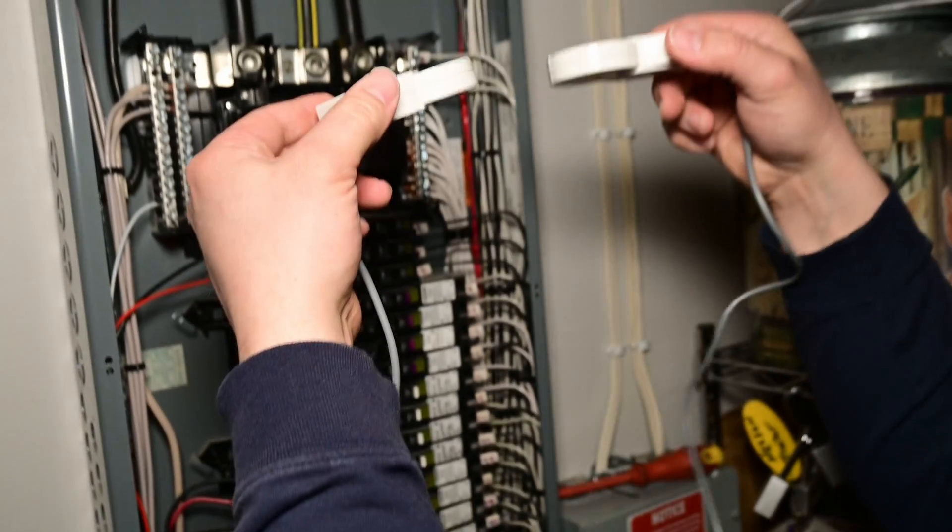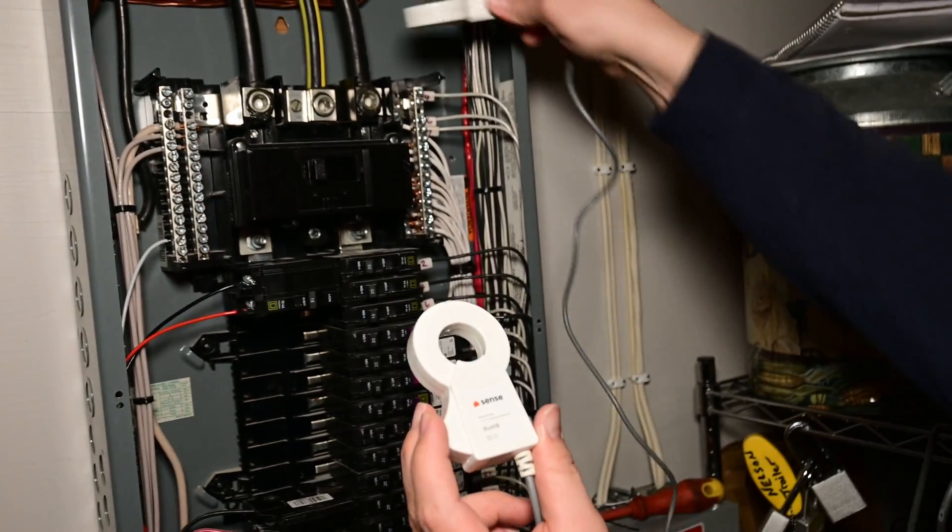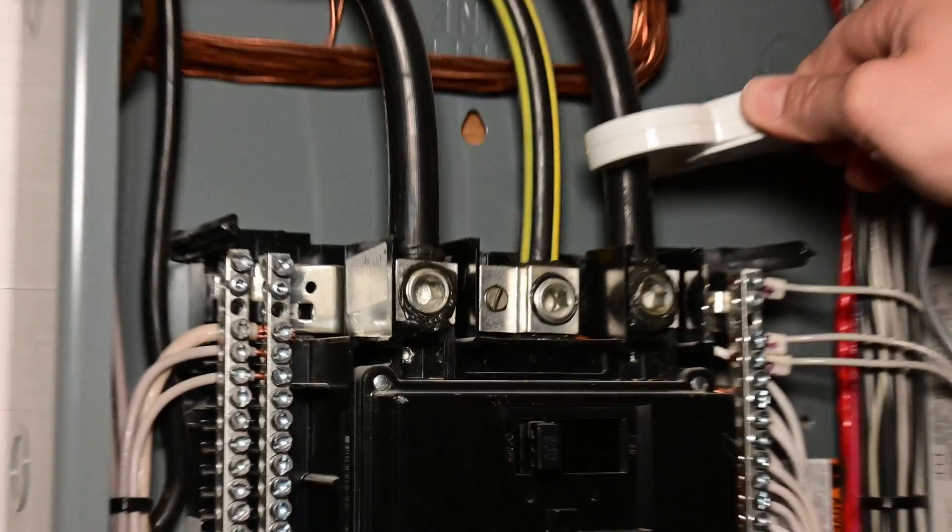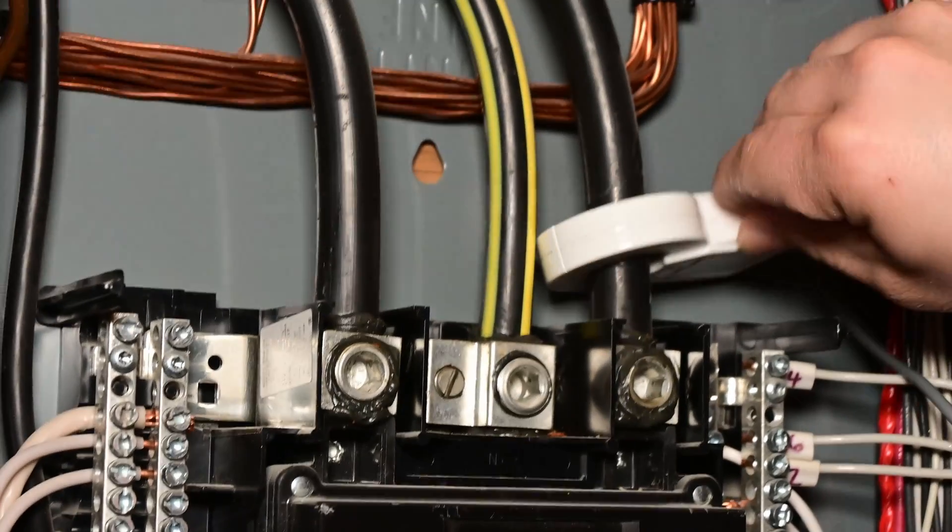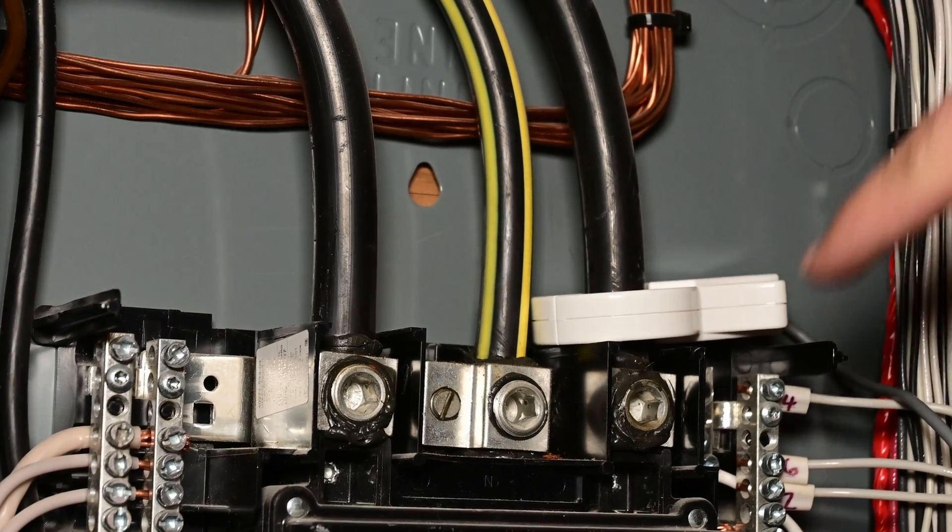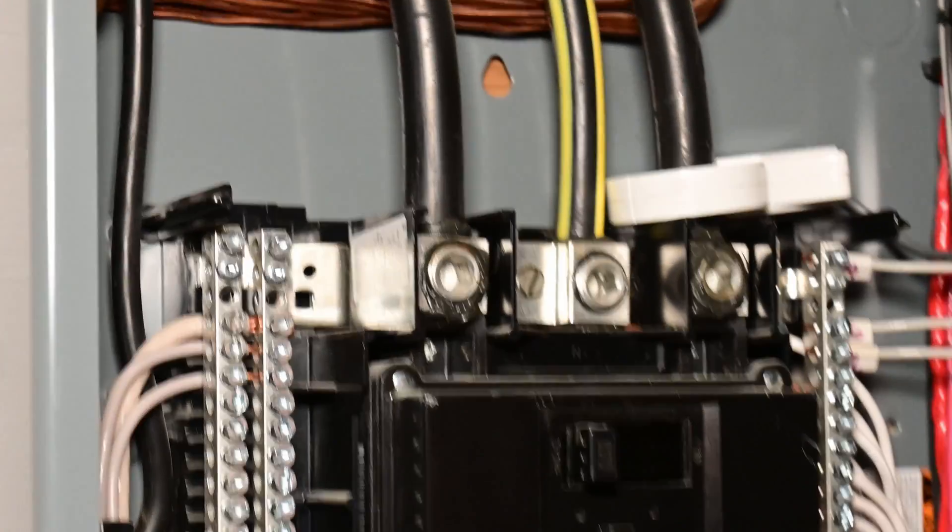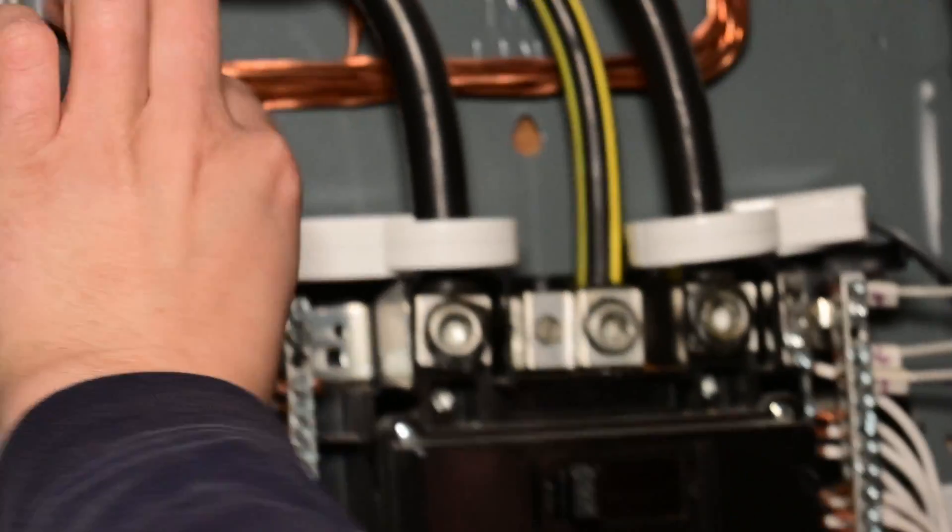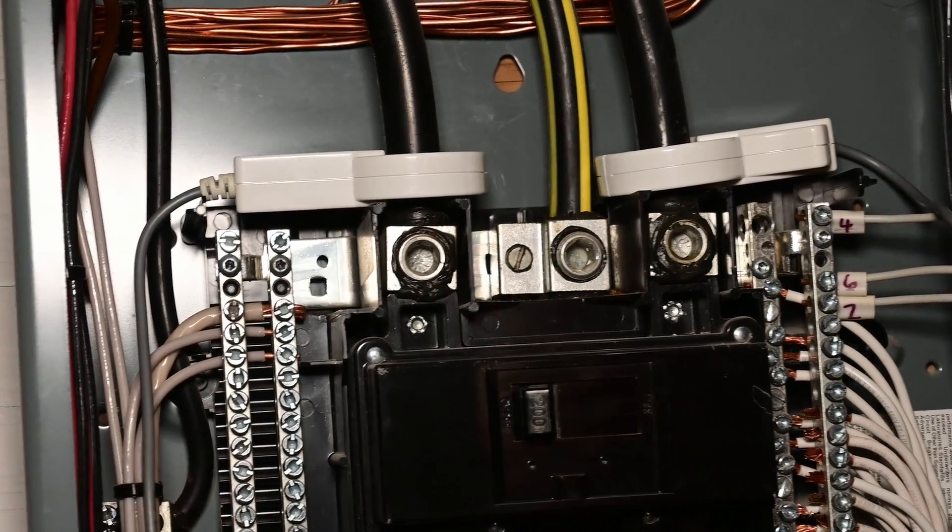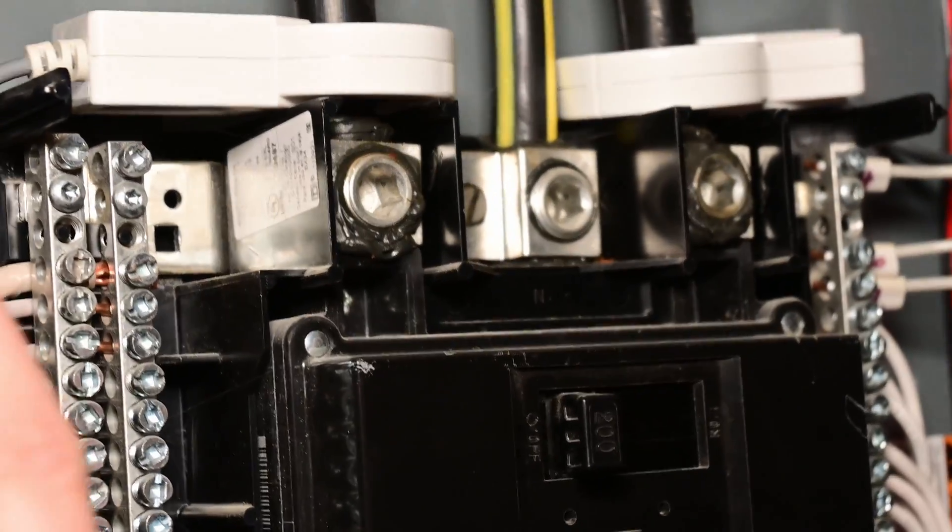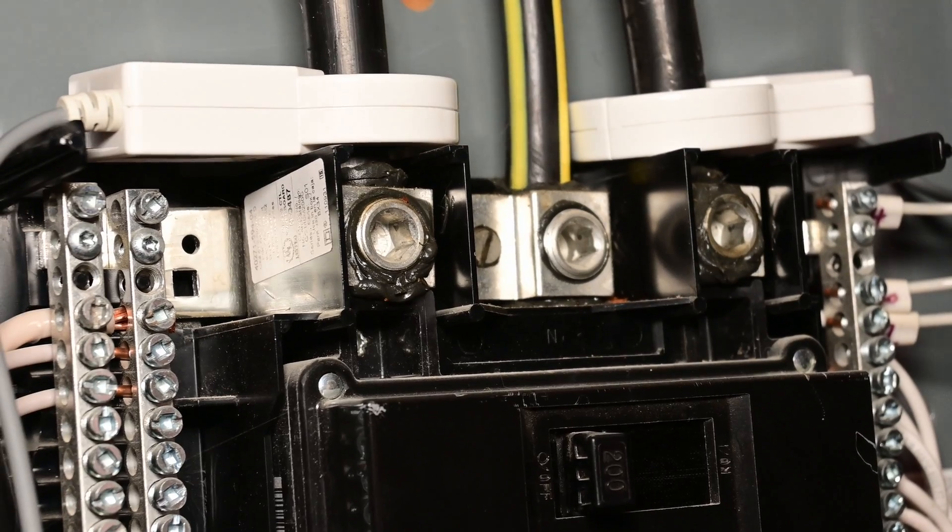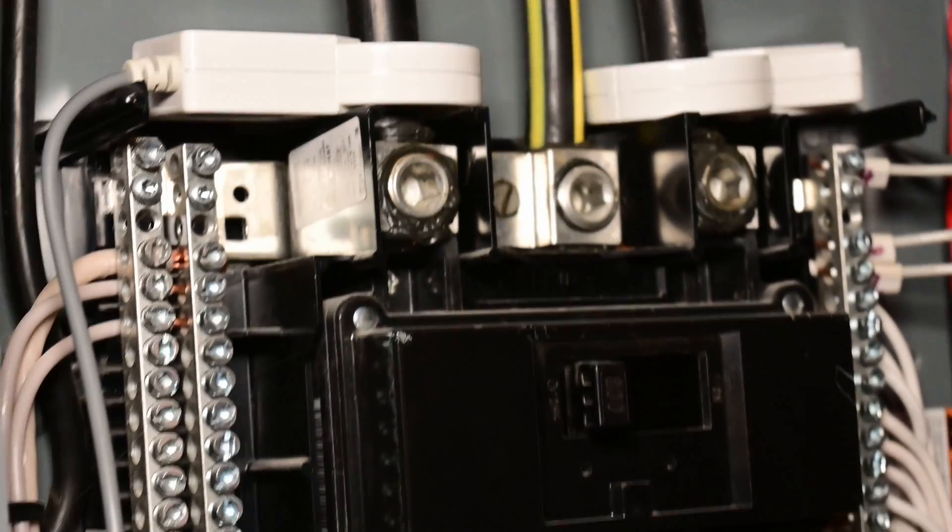We're going to clamp these around each one of these legs. I'm just going to use one hand because these are still live right here. That's still live power. If I were to touch that, it would be very unpleasant. I'll clamp my second one around the other side. You just want to make sure that there's enough room so that they can fully close, and then you can rotate them back so that they are out of the way and that the panel cover will still be able to be put in place.